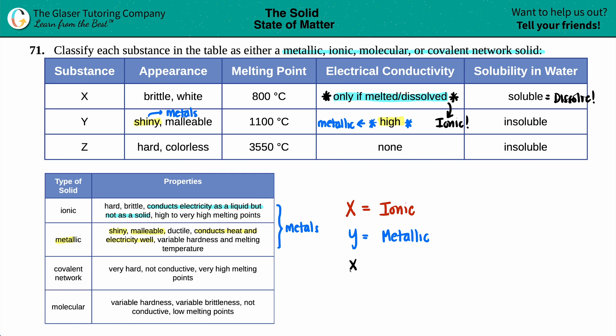Last one, Z. Z is hard and it's colorless. So it's not a white color, not shiny. Can't really see it, but whoa, 3,550 degrees Celsius. This is crazy high. This is a crazy high melting point. So I'm going to keep that in mind - crazy high melting points with no electricity, no electrical conductivity. So if you probe it, it won't turn a light bulb on and it's not soluble in water. So it does not dissolve in water.